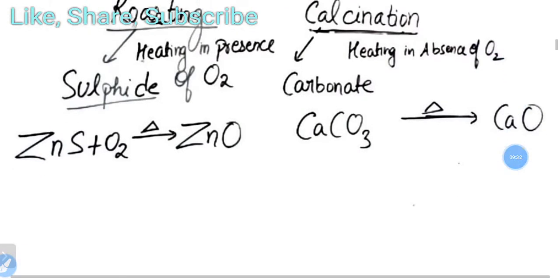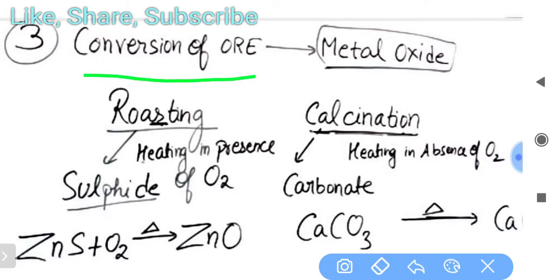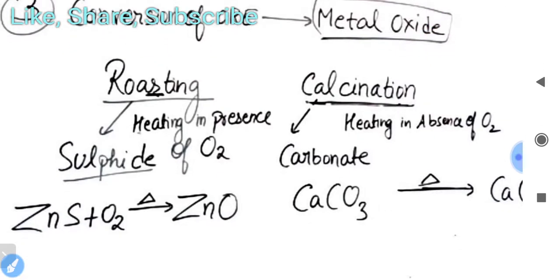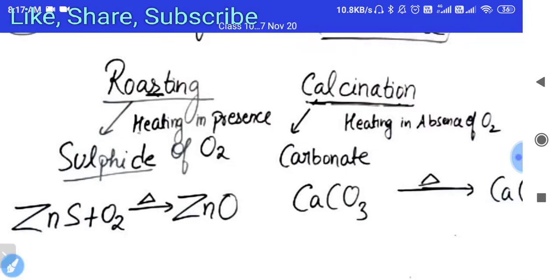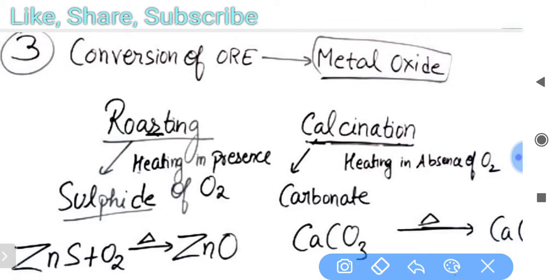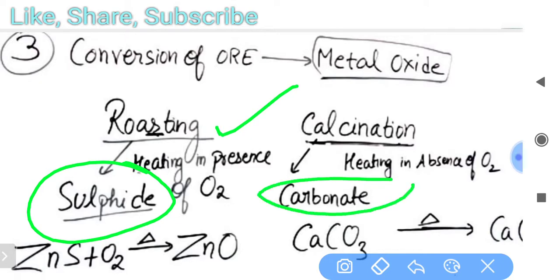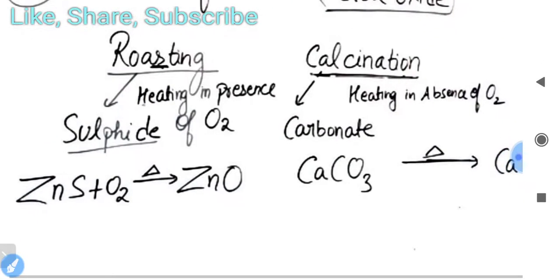The third step is conversion of ore — we want to get metal oxide from the ore. There are two main processes: roasting and calcination. Roasting means heating in the presence of oxygen. Calcination means heating in the absence of oxygen. When our ore is a sulfide, we use roasting; when our ore is a carbonate, we use calcination.